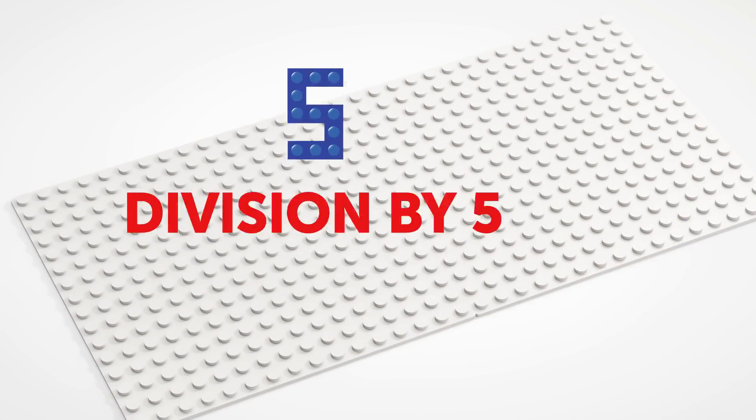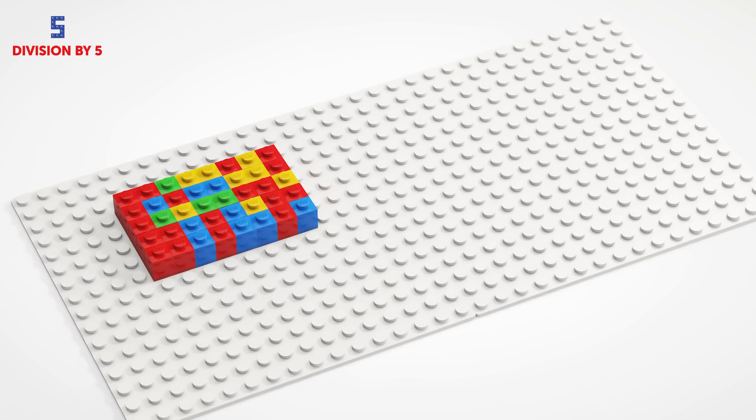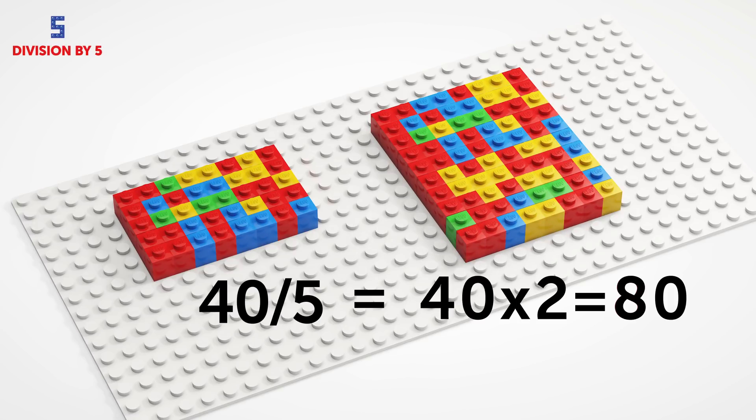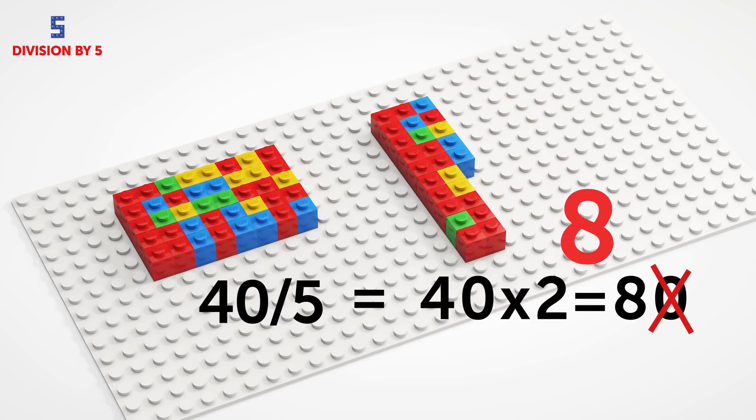5. Division by 5. Dividing large numbers by 5 is, in fact, pretty simple. All you need to do is multiply your number by 2, and then move the decimal back one space. Ta-da!